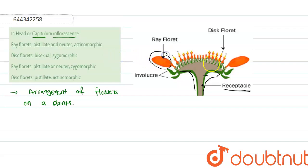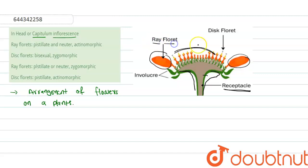One type is found on the periphery and the other type is found in the middle part. The peripheral flowers are called ray florets, and the ones in the middle part are called disc florets. Now, what are the specific characteristics of each?